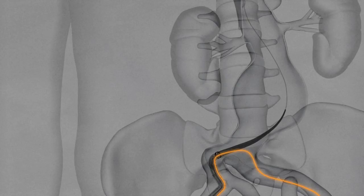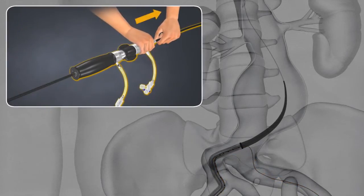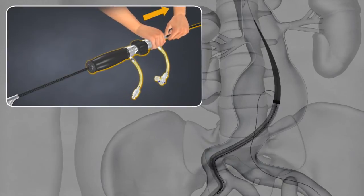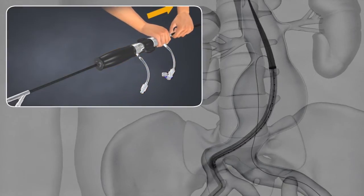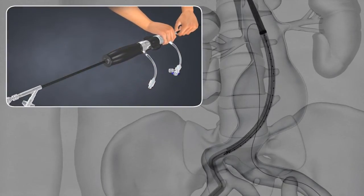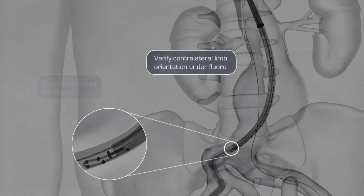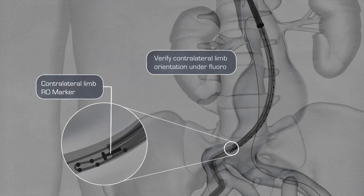Stop advancement at this point and check the orientation of the contralateral limb wire. Advance the delivery system up into the aorta until the limbs are above the aortic bifurcation and verify the contralateral limb orientation indicated by the RO marker.